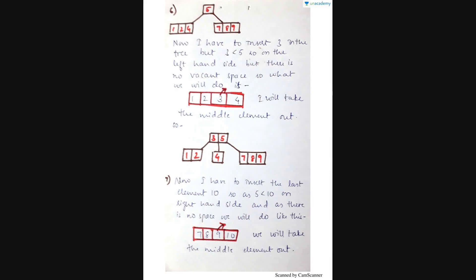After this I have to insert 3. Since 3 is smaller than 5, it has to be placed on the left hand side. But the problem is the 3 key nodes are completely filled. So we will arrange them in ascending order and take the middle element above. Since the root has only a single element with 2 more places vacant, we shift 3 up there, with smaller elements than 3 on the left and greater elements on the right, and elements greater than 5 on the right of 5.